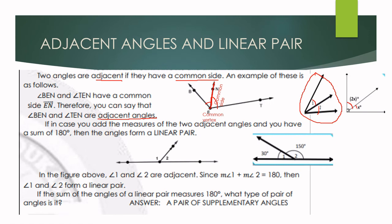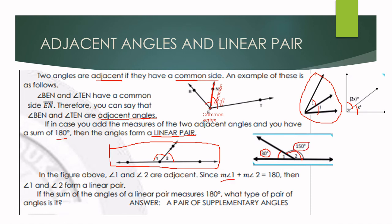Another example is angle 2X and angle X. If the measures of two adjacent angles have a sum of 180 degrees, then the angles form a linear pair. For example, the measure of angle 1 is 30 degrees and the measure of angle 2 is 150 degrees. We can say that angle 1 and angle 2 form a linear pair. If we add the measurements, it will sum up to 180 degrees.